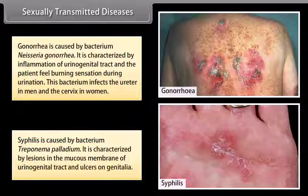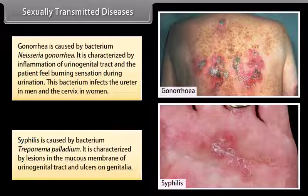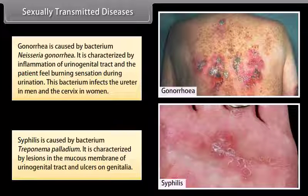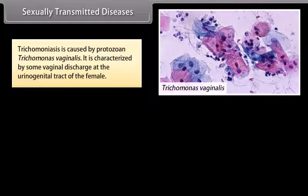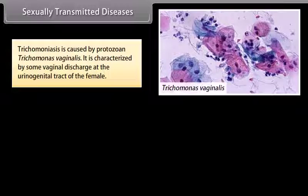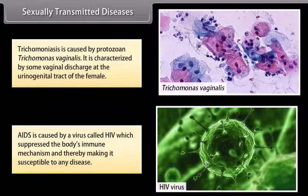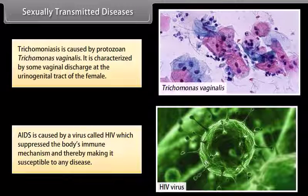Syphilis is caused by the bacterium Treponema pallidum. It is characterized by lesions in the mucous membrane of the urinogenital tract and ulcers on the genitalia. Trichomoniasis is caused by the protozoan Trichomonas vaginalis, characterized by vaginal discharge at the urinogenital tract of the female. AIDS is caused by a virus called HIV, which suppresses the body's immune mechanism, making it susceptible to any disease.